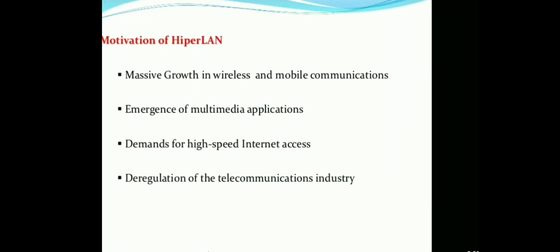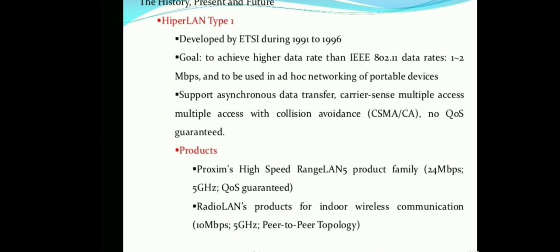HiperLAN Type 1 was developed by ETSI during the period 1991 to 1996. The goal of HiperLAN 1 was to achieve a higher data rate than IEEE 802.11 (Wi-Fi), which means a data rate greater than 1 to 2 Mbps.